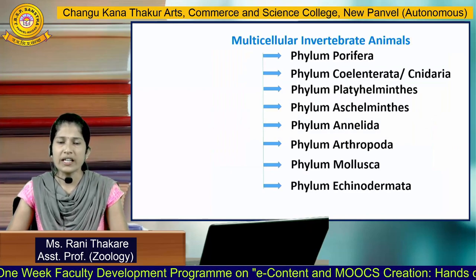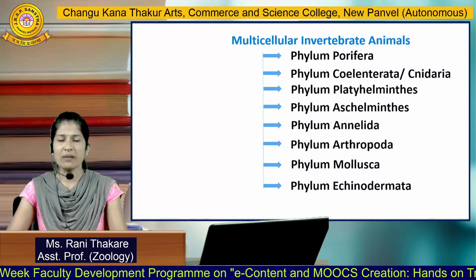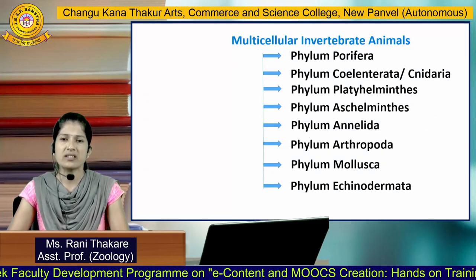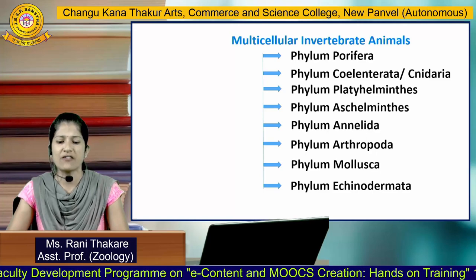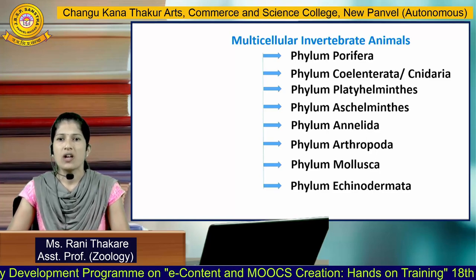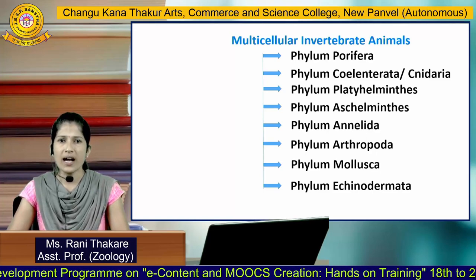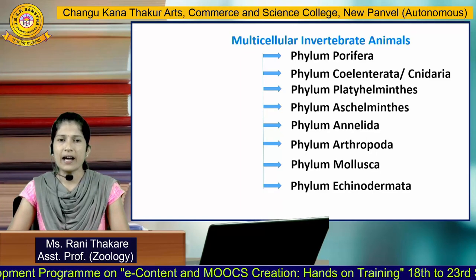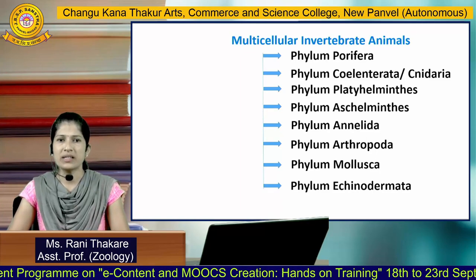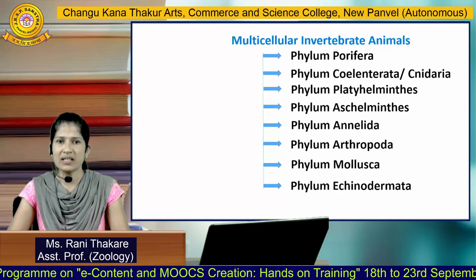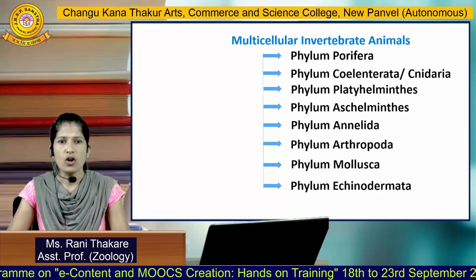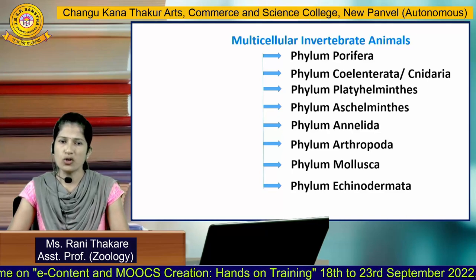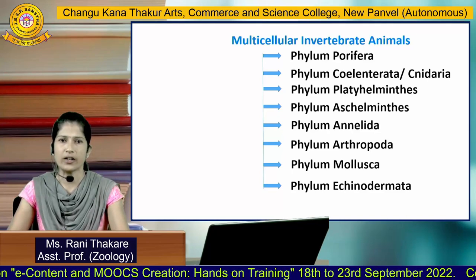Multicellular invertebrate animals are placed under eight different phyla: phylum Porifera, Coelenterata, Platyhelminthes, Aschelminthes, Annelida, Arthropoda, Mollusca, and Echinodermata.